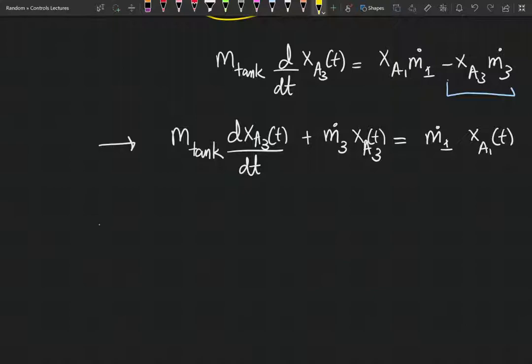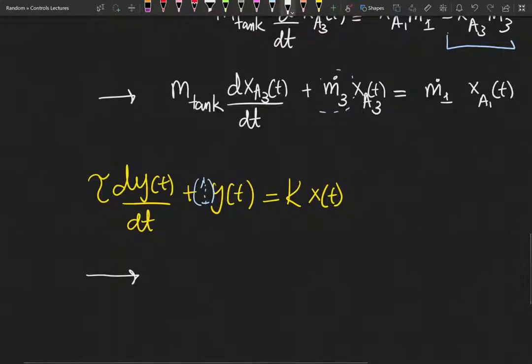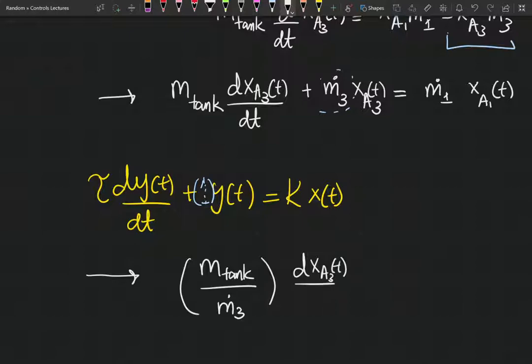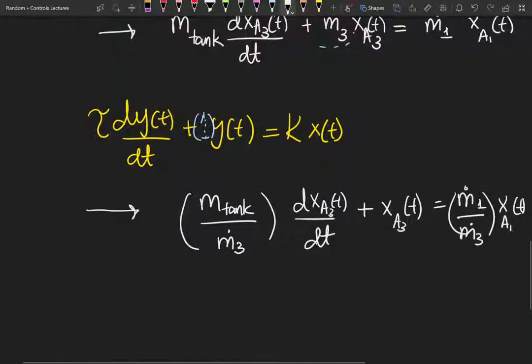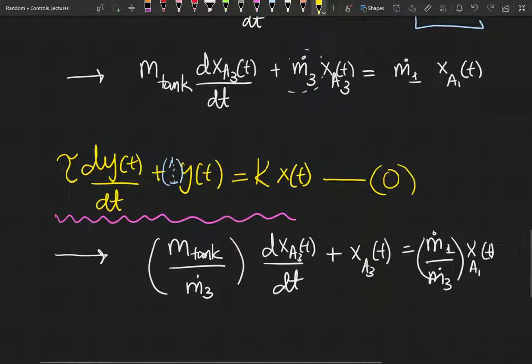I'm going to rearrange this so that it will look like the first order model. The standard first order model had this form: y(t) equals K times x(t). We need to isolate the coefficient—the output variable must be one. We're going to divide everything by m dot 3. So you get m_tank divided by m_3 times dXA3/dt plus XA3(t) equals m dot 1 divided by m dot 3 times XA1. I'm going to call this equation 2.